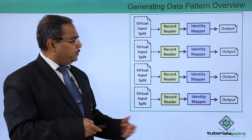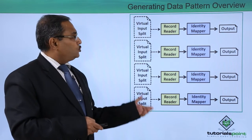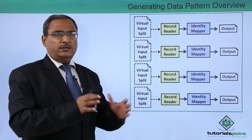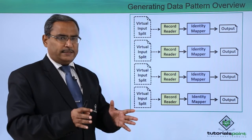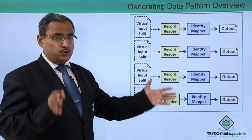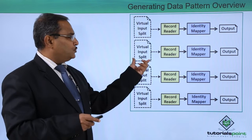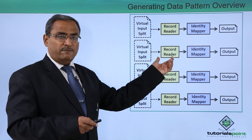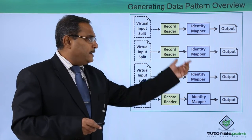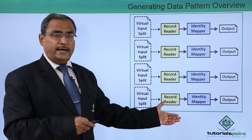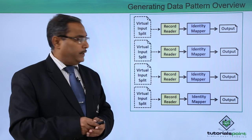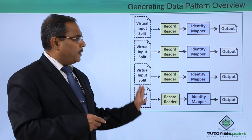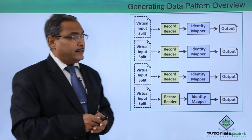Here is the diagram with the help of which we can discuss the generating data pattern. We are having virtual input splits — the data has been formed from the very scratch, with no physically pre-existing data sets. Since that data set is a huge one, we are having multiple input splits. We then have a record reader which reads records from the virtual input splits, followed by an identity mapper. Using this identity mapper, we can put some business logic and the mapper will produce the respective output parts.